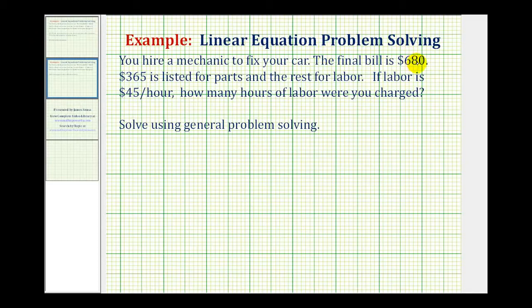The total bill is $680, and of this amount, $365 is listed for parts. So if we take $680 and subtract $365, that would leave us with the total labor cost. Then, knowing the labor cost is $45 per hour, we should be able to figure out how many hours we were charged.